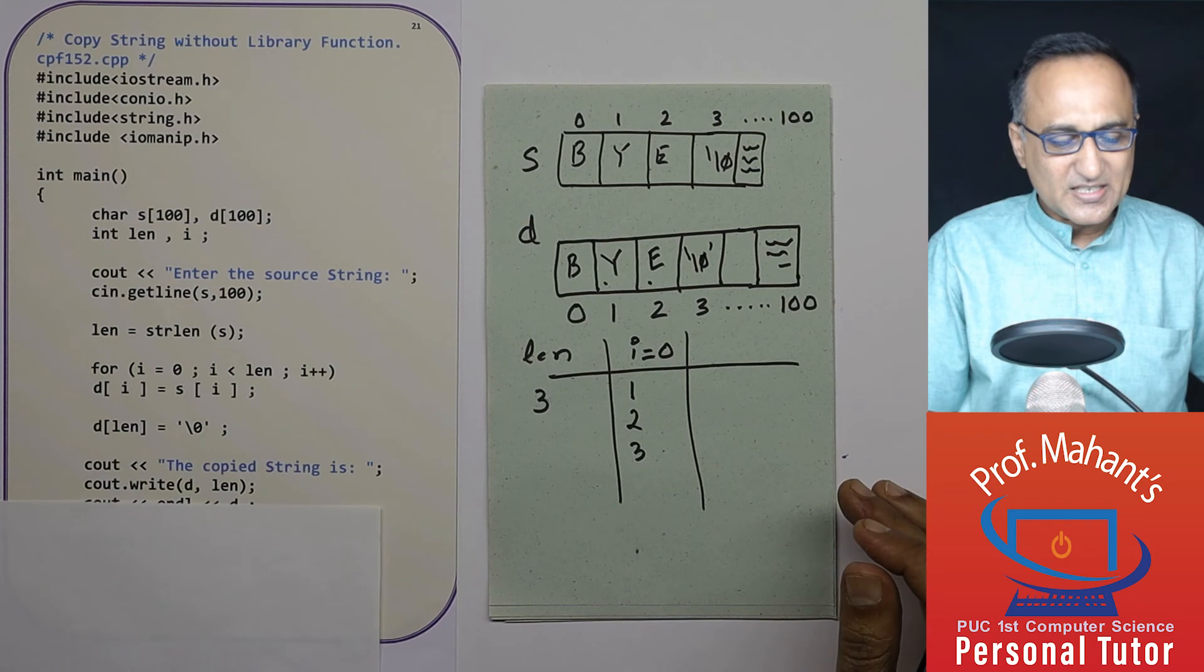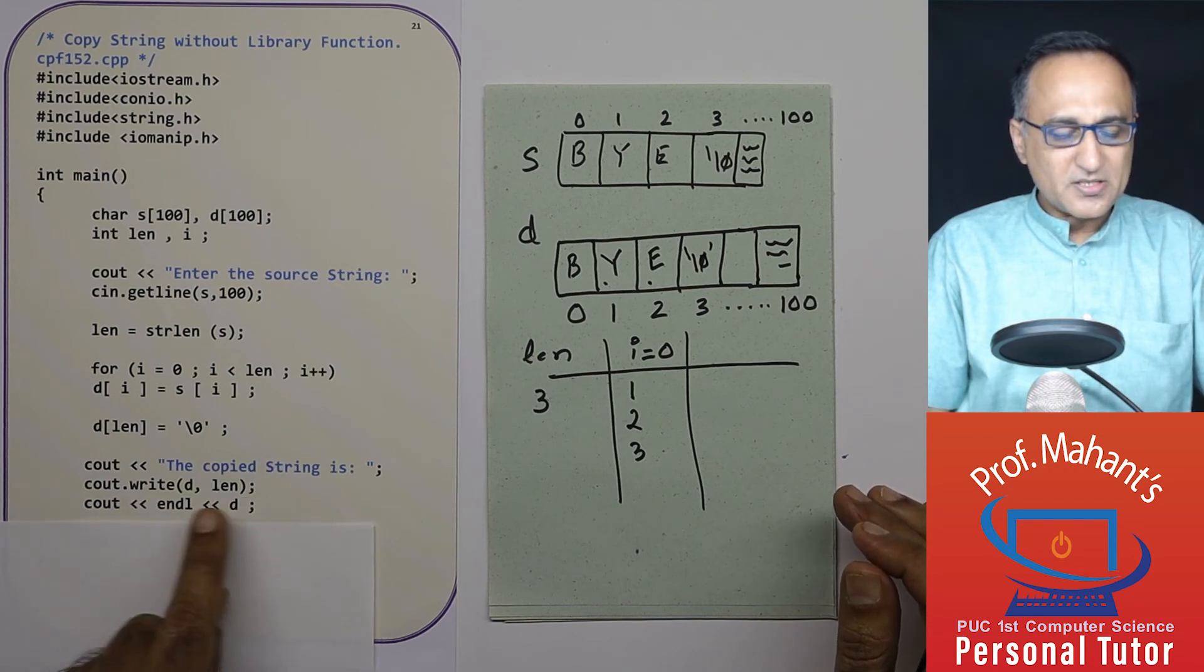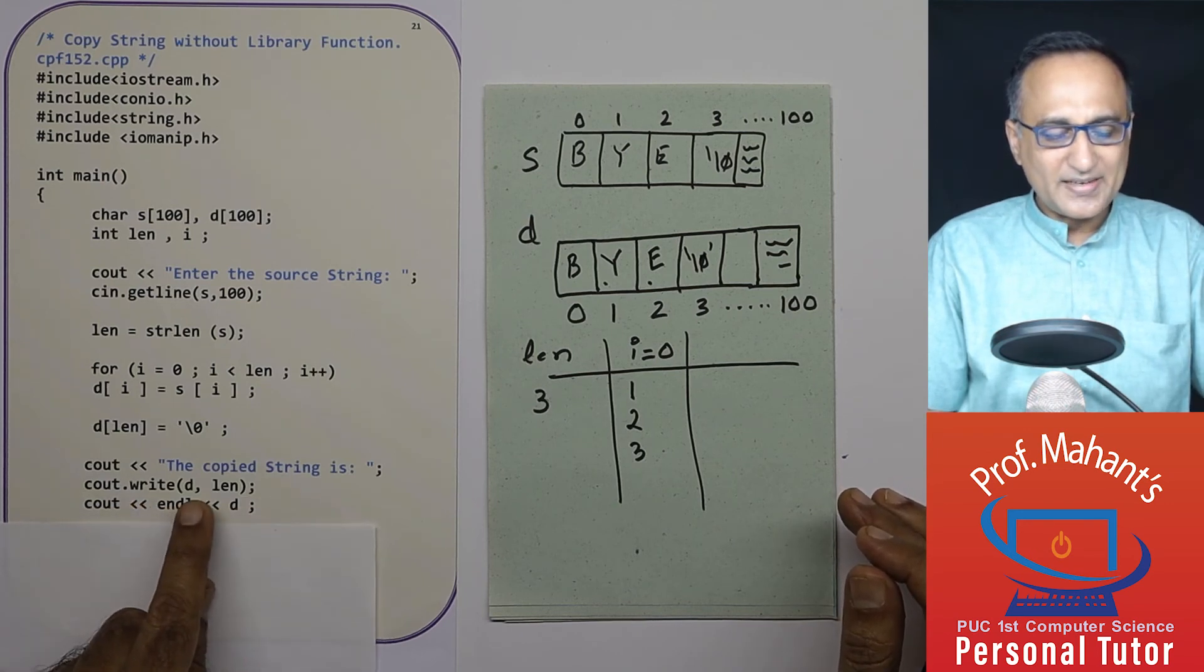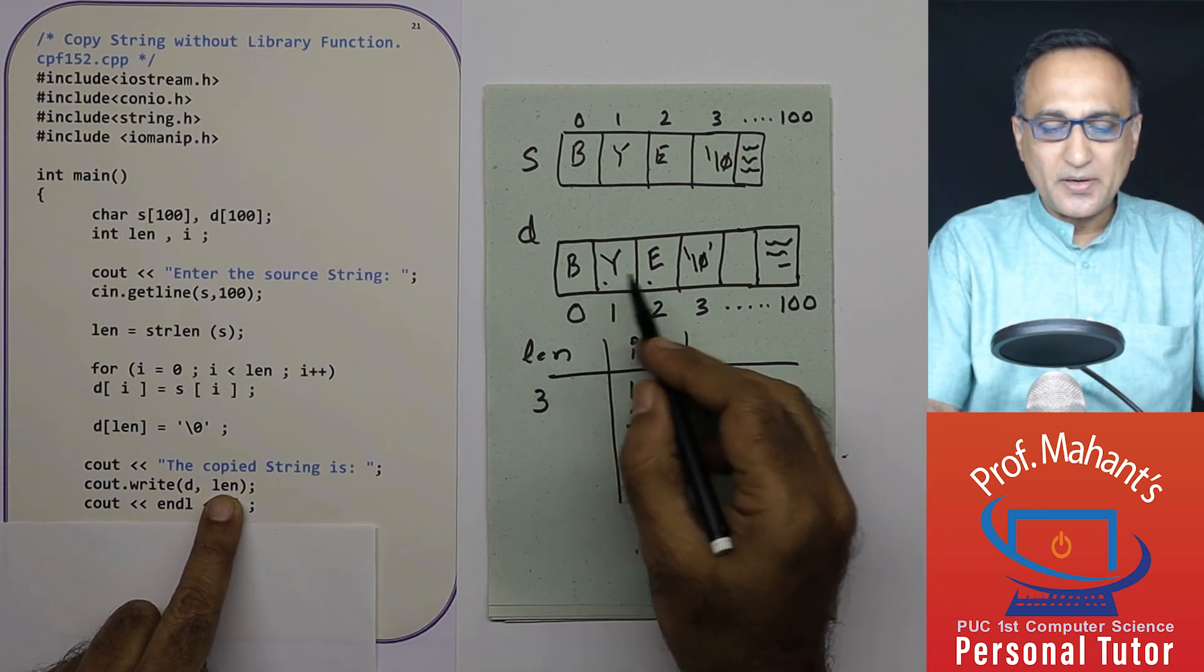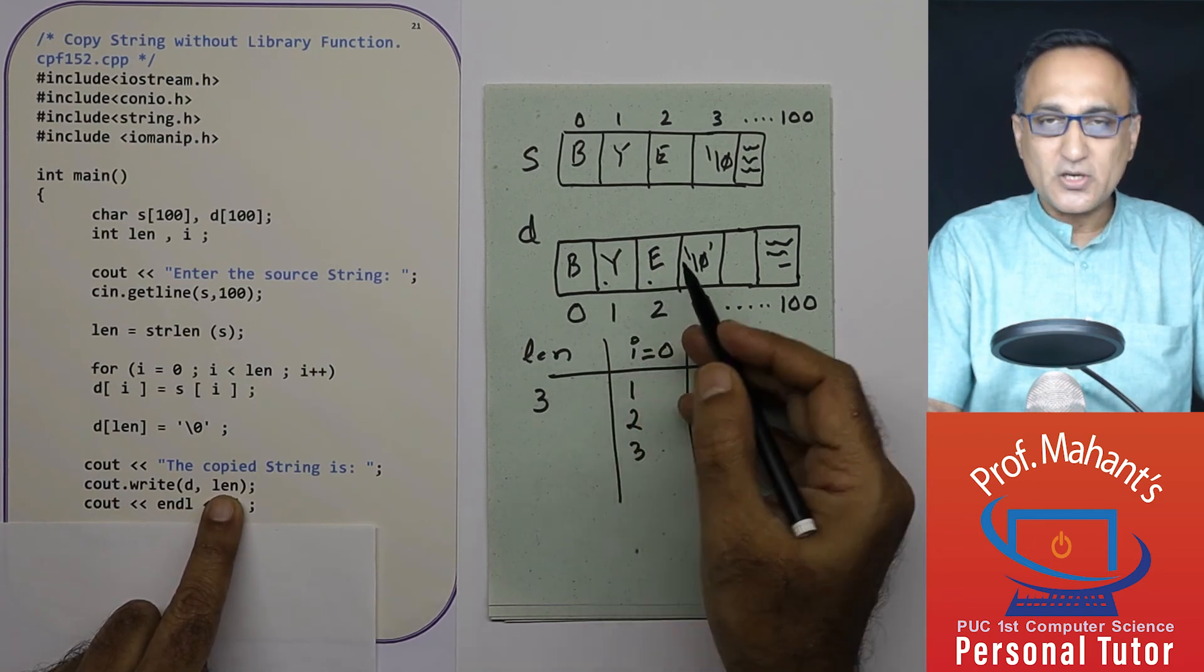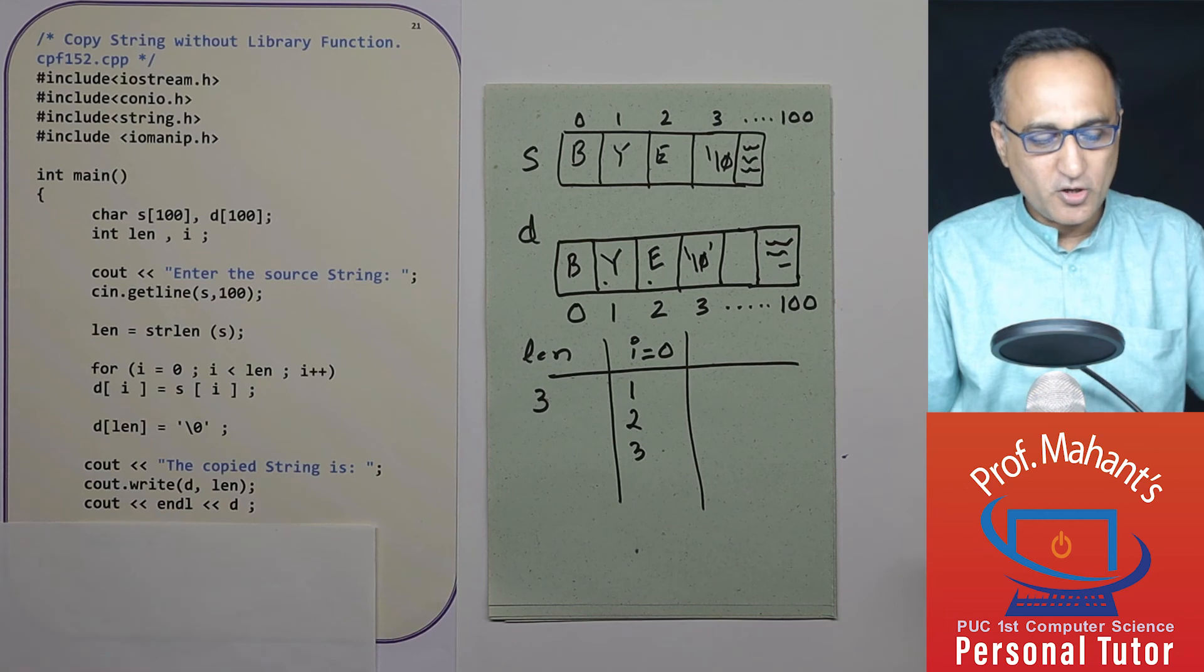And then next I can simply print the copied string. If I do a C out or write d and length, it is going to print bye on your Windows screen or Linux machine whatever you are using.